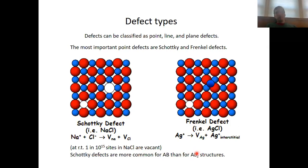Opposed to that, we know so-called Frenkel defects. In Frenkel defects, one ion moves from its equilibrium position to a so-called interstitial site. For example, in silver chloride, we can move a silver ion from its equilibrium position to an interstitial site.